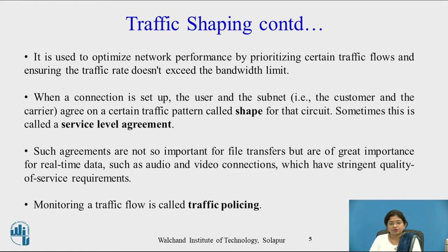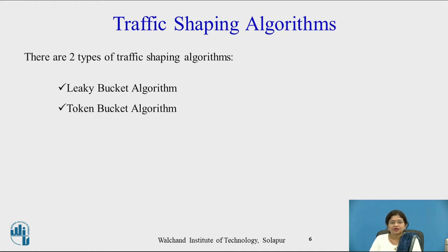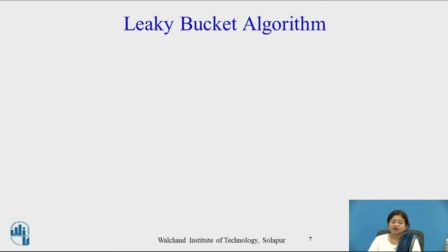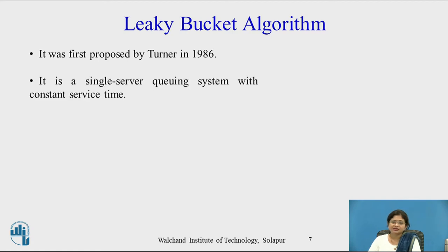Monitoring a traffic flow is called traffic policing. There are two types of traffic shaping algorithms: the first one is the leaky bucket algorithm and the other is the token bucket algorithm. The leaky bucket algorithm was first proposed by Turner in 1986. It is a single server queuing system with constant service time.